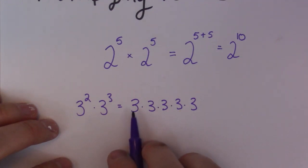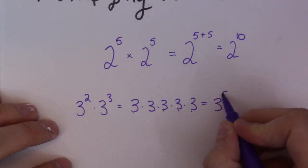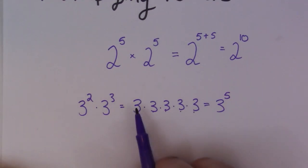why this law works is that now I have 1, 2, 3, 4, 5 threes. So, I can write that as 3 to the 5. So, really, all I'm doing when I'm adding the exponents is just skipping this step right here, which makes sense.